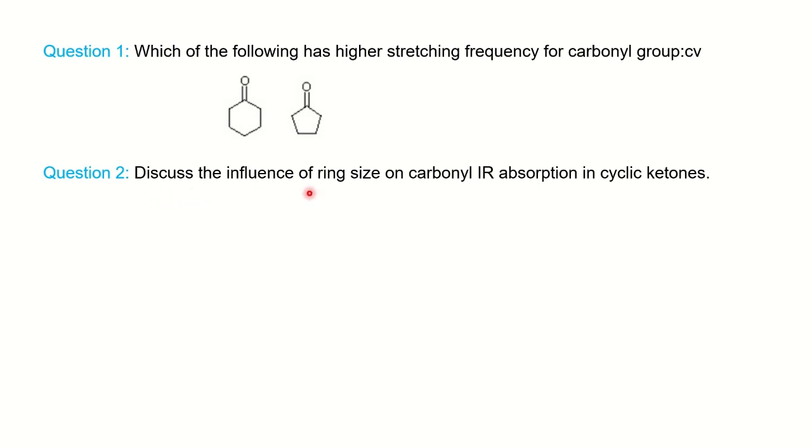We are talking about carbonyl frequency, so you can use the same justification. Another type of question may ask: Discuss the influence of ring size on carbonyl IR absorption in cyclic ketones. Here you have to write down all different sizes of rings and mention the order of carbonyl frequency with explanation and justification.